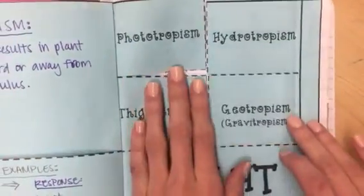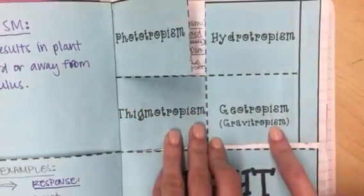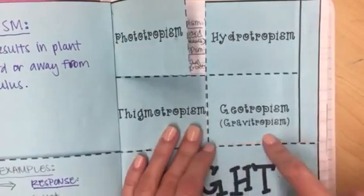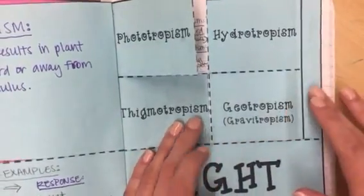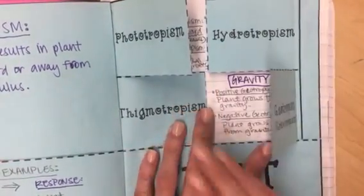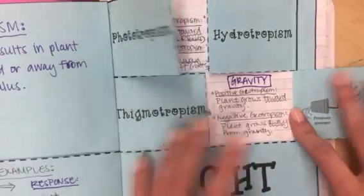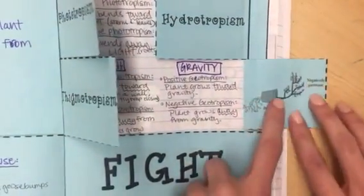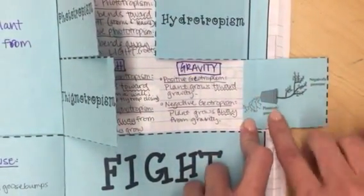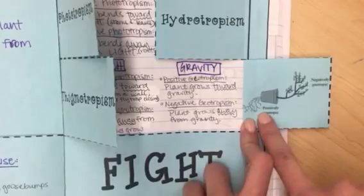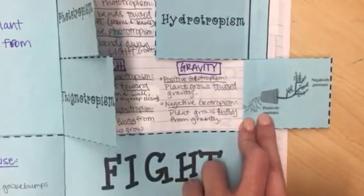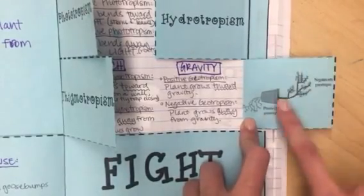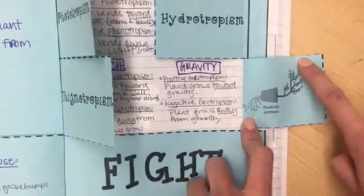The last tropism is geotropism, also called gravitropism — they're the same thing. Positive geotropism is when the plant grows toward gravity, so the roots grow toward gravity. Negative geotropism is the branches and leaves that grow away from gravity.